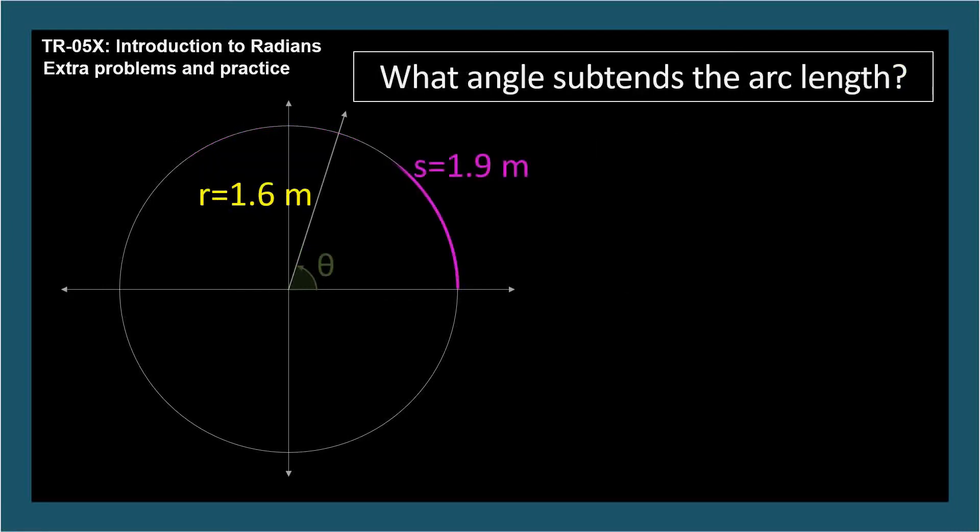What angle subtends the arc length? Start with the arc length formula. In this case, we're asked to find the angle, so we'll isolate theta to solve for the angle. Plug in the arc length and radius, then divide to get 1.2 radians.